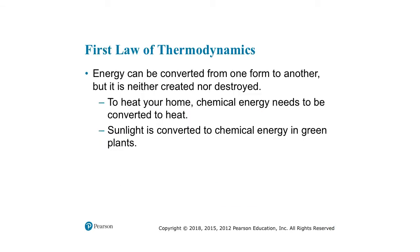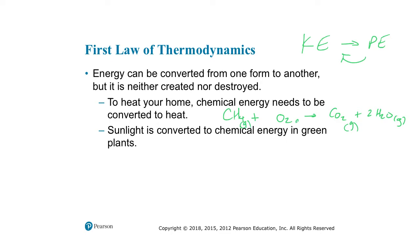The first law of thermodynamics states that energy can be converted from one form to another, but it can neither be created nor destroyed. For example, you can take energy stored in chemical bonds — like reacting CH4 with oxygen to produce CO2 and water — which requires two O2s to give enough oxygen on both sides. This is natural gas burning, and you need to be careful about limiting O2, which can produce carbon monoxide.